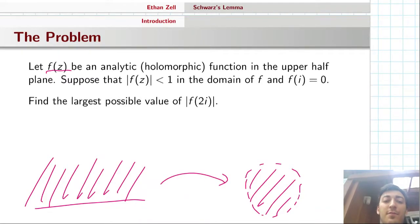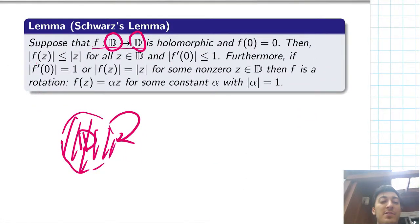And this kind of hints back to what we're trying to do. Because our original goal is to find the largest possible value of the modulus of f at some number. So maybe if it obeys Schwarz's lemma, then we can say something about this.